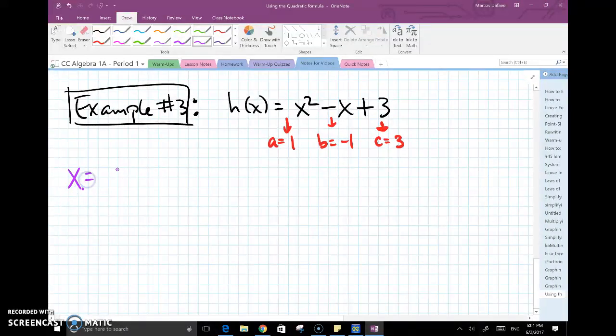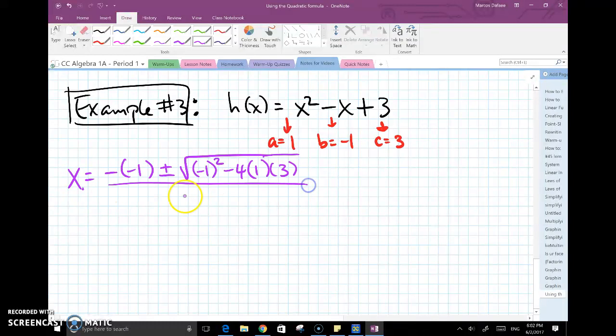So this would be x equals negative negative 1 plus minus square root of negative 1 squared minus 4 times 1 multiplied by 3, all over 2 times 1. So this double negative becomes positive 1 plus minus. This is negative 1 squared becomes 1. And if you multiply negative 4 with 1 and then with 3, you get minus 12. So it's 1 minus 12 all over 2.